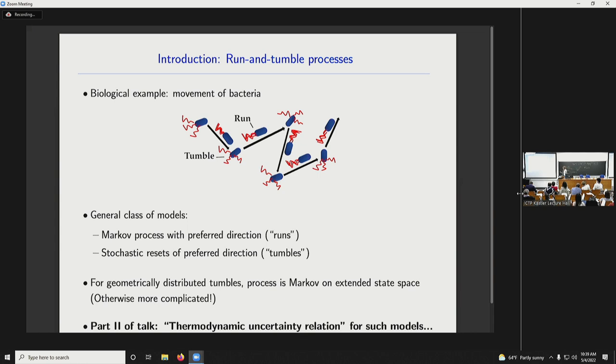And you can use very similar mathematical formalism to treat this kind of process. And I'm going to be interested in a sort of general class of run and tumble models that consist of some known Markov process with a preferred direction. So you can think if you want to be concrete of a random walk, but it could be something much more complicated, punctuated by stochastic resets of that preferred direction. So the parts between the resets we call runs and the resets in this language we call tumbles. If the length of time between the resets is geometrically distributed in discrete time or exponentially distributed in continuous time, then, of course, the process is still Markov, but on an extended state space.